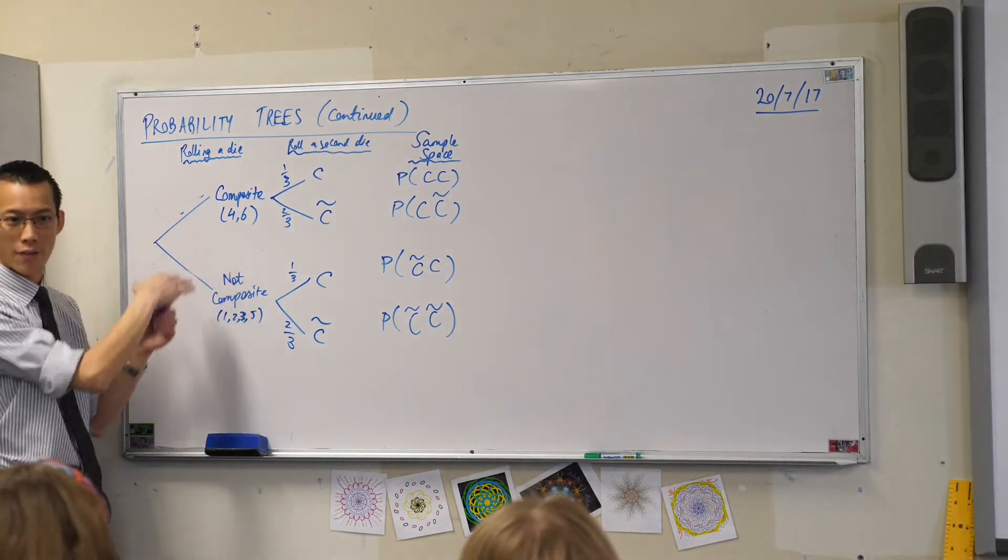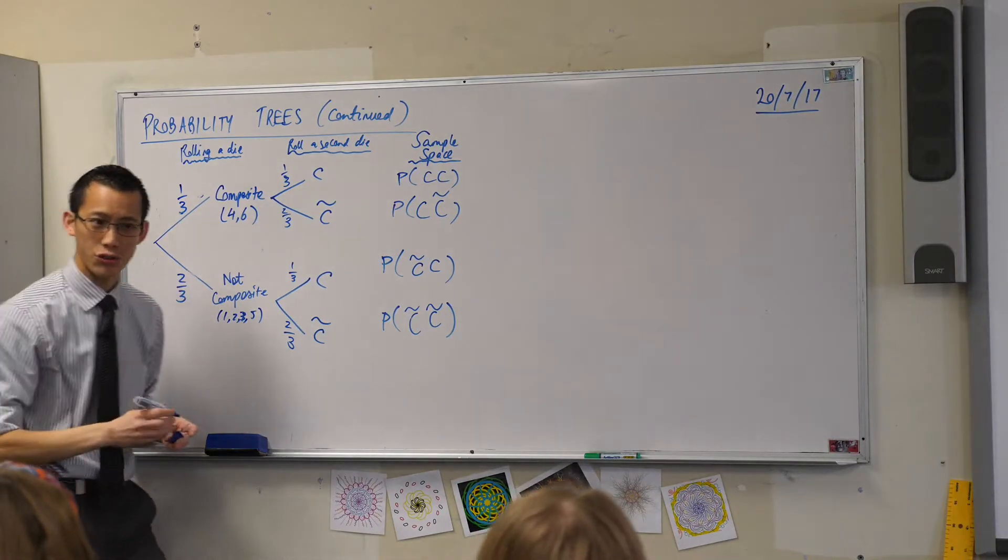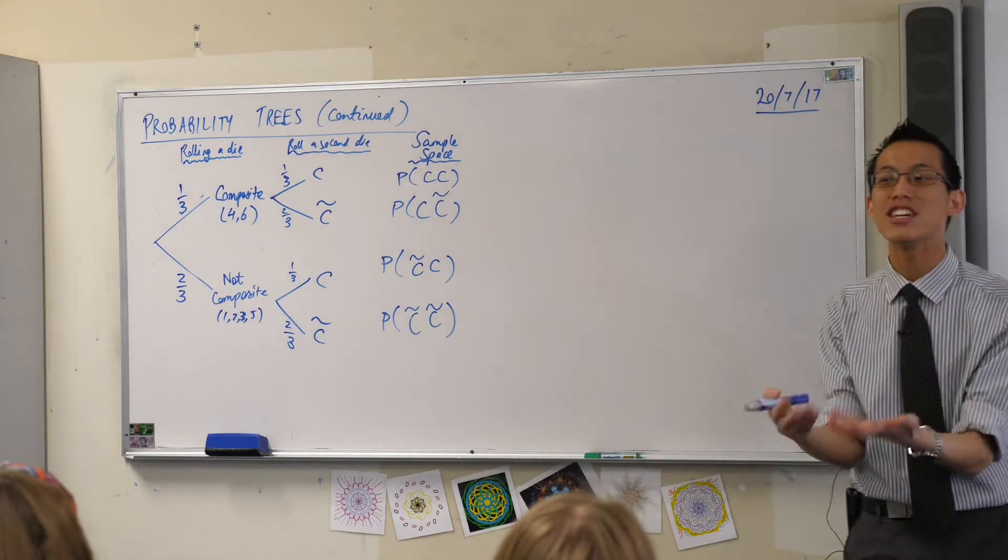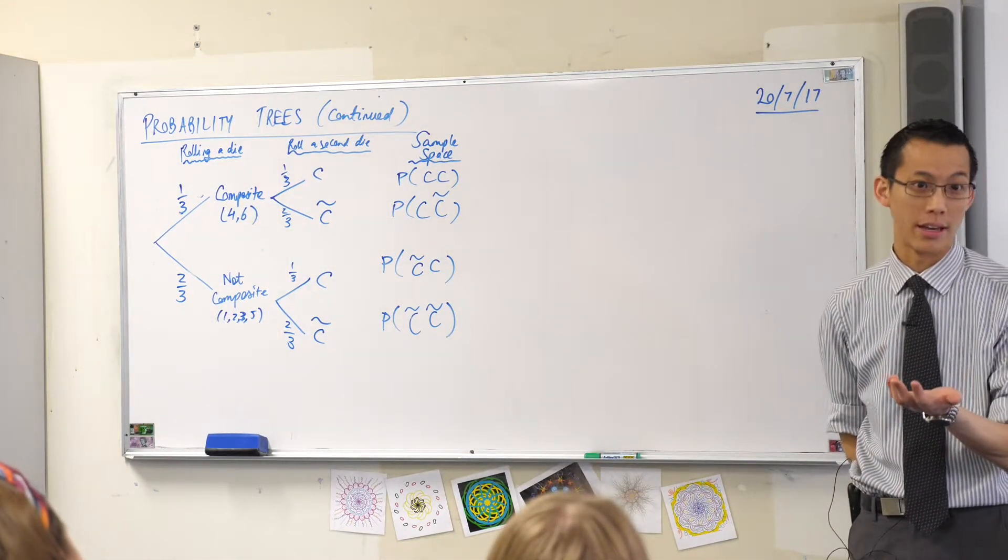I guess that would make it 50-50, a half and a half. But that's not the case. It's not true. So each time you consider one of the little components, one of the stages of the event, they're all weighted differently.